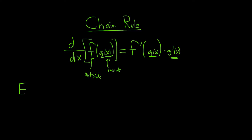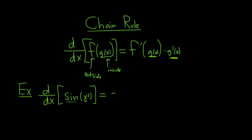Let's do a couple examples. Say we have to take the derivative with respect to x of sine of x cubed. If it was just sine x, the answer would be cosine x. But here the inside function is x cubed and the outside function is sine x. So the derivative of sine is cosine, and you evaluate it at the inside — leaving it untouched — so cosine of x cubed, times the derivative of the inside. The derivative of x cubed is 3x squared.